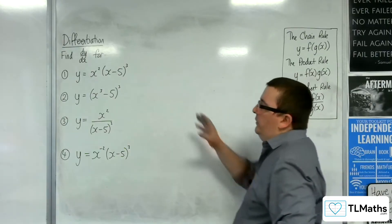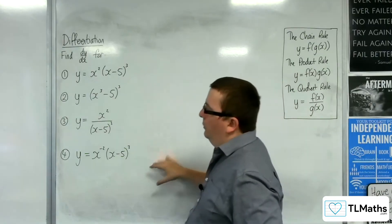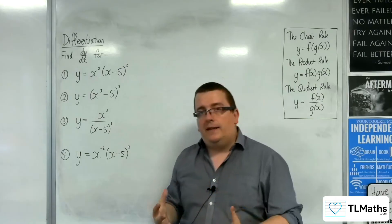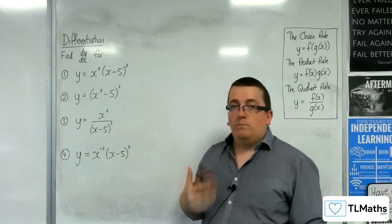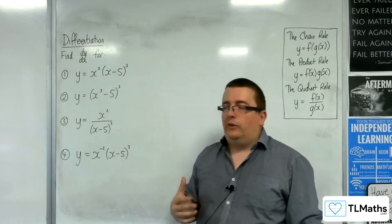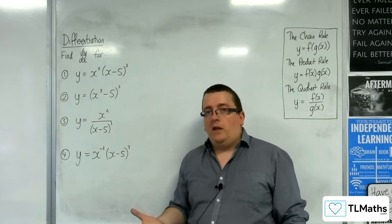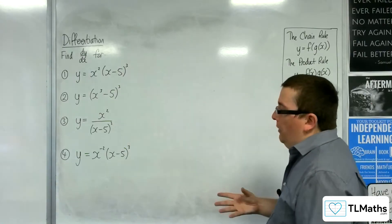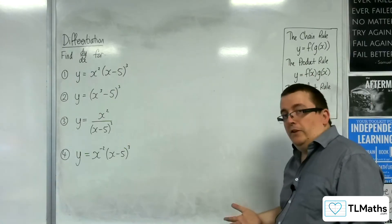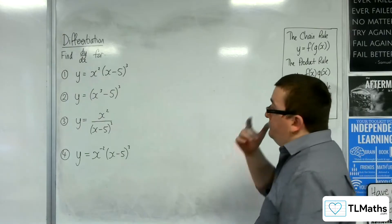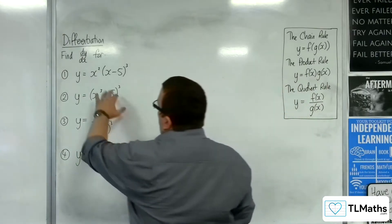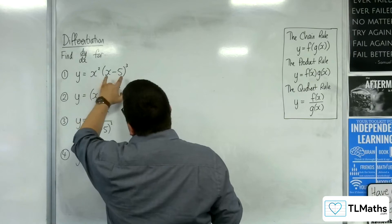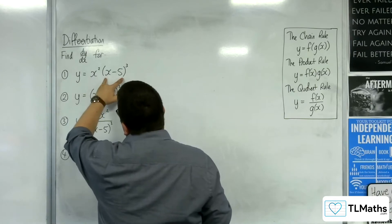So let's say we've got these four examples, and we're going to work through them to see if we can figure out which method we should use. Sometimes the method will be obvious; other times you may have a bit of a choice. Let's have a look at the first one: y equals x squared times x minus 5, all cubed.